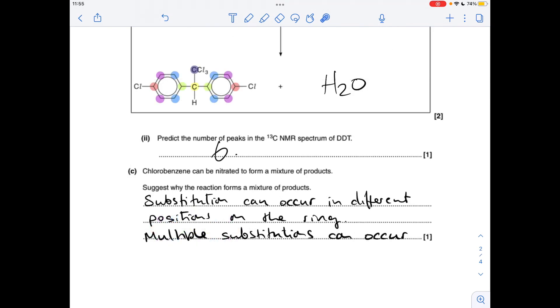Part C, why do we get a mixture of products when chlorobenzene's nitrated? So a couple of answers you could give. Substitution can occur in different positions on the ring, or multiple substitutions could occur.